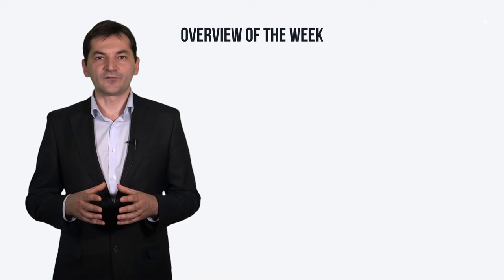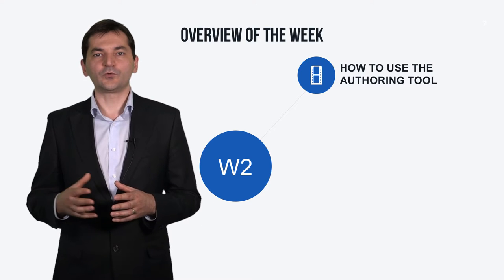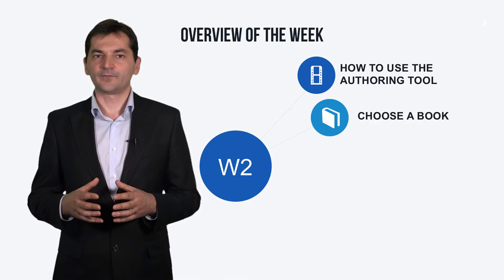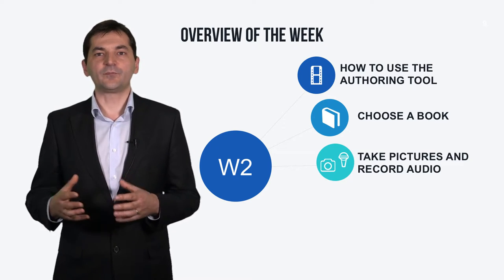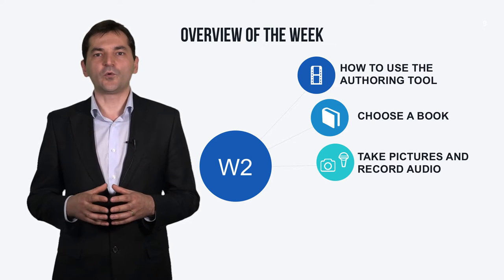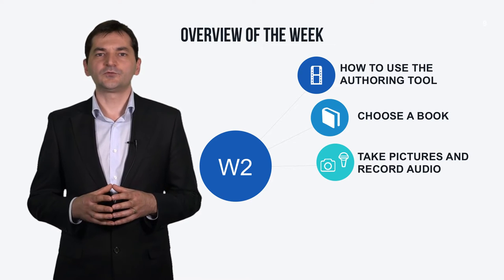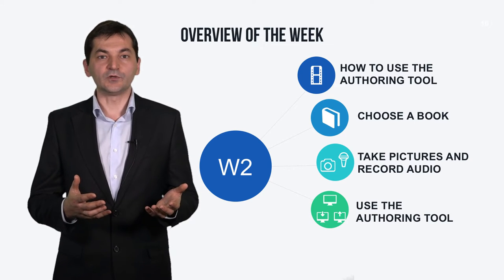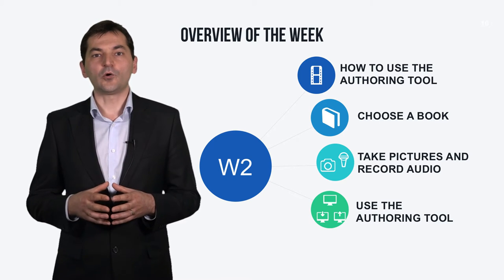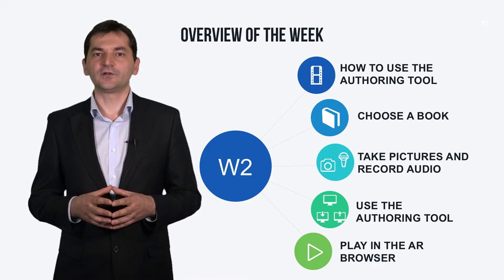Let's have a look at how we'll spend this week. Firstly, you have to watch a video explaining step by step how to use the authoring tool to create an augmented book. Then you have to choose a book from your library that has images, take pictures of the pages you want to augment, and record the audio that is launched by the application when the page is displayed. You can use your own phone to take pictures and record the audio. You will use all this media in the authoring tool, export the result, and load it on your Android phone.